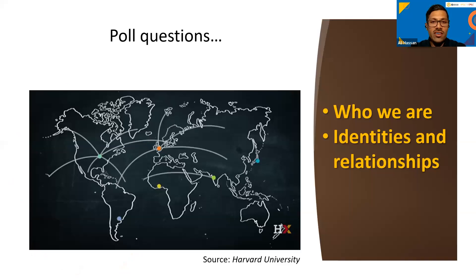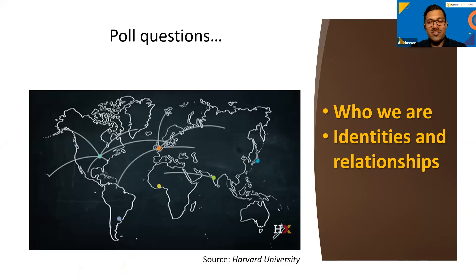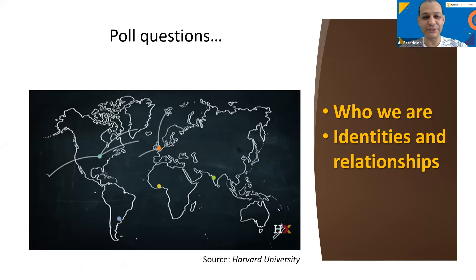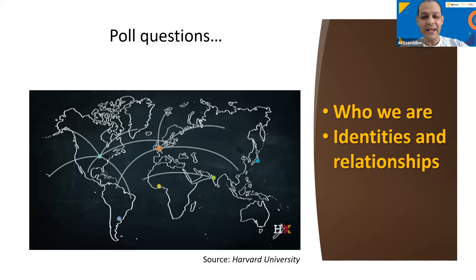We're going to head to some questions. I've chosen two themes: the PYP central idea theme 'Who We Are,' and one of the MYP global contexts, 'Identities and Relationships,' because we want to know where you are from and who you are. On the screen you'll see three questions: where are you now — Asia, North America, South America, Europe, Middle East, Australia, Africa — what is your role — teacher, coordinator, leadership, or other — and which IB learner profile attribute is most important to you currently?